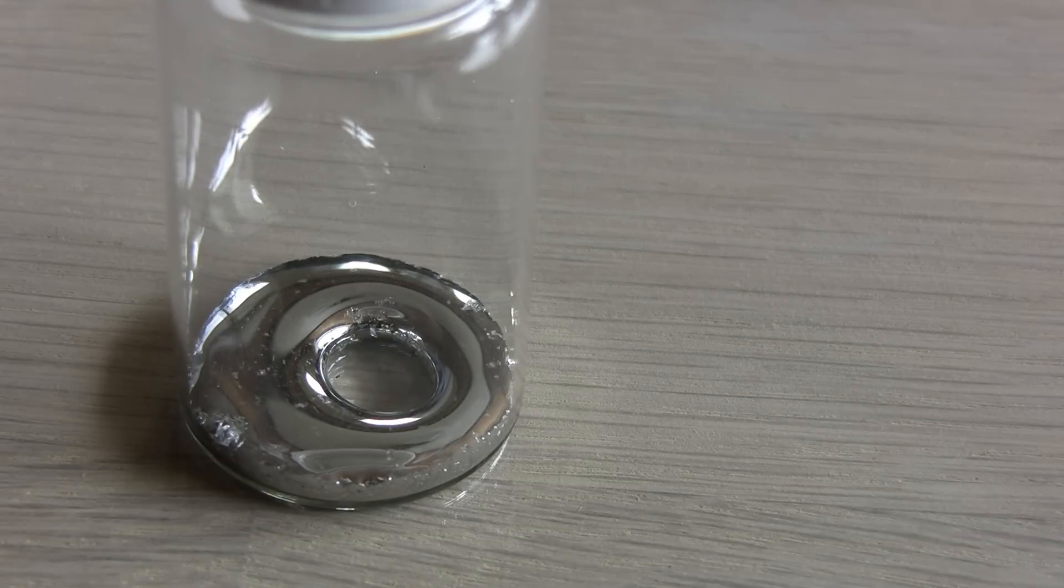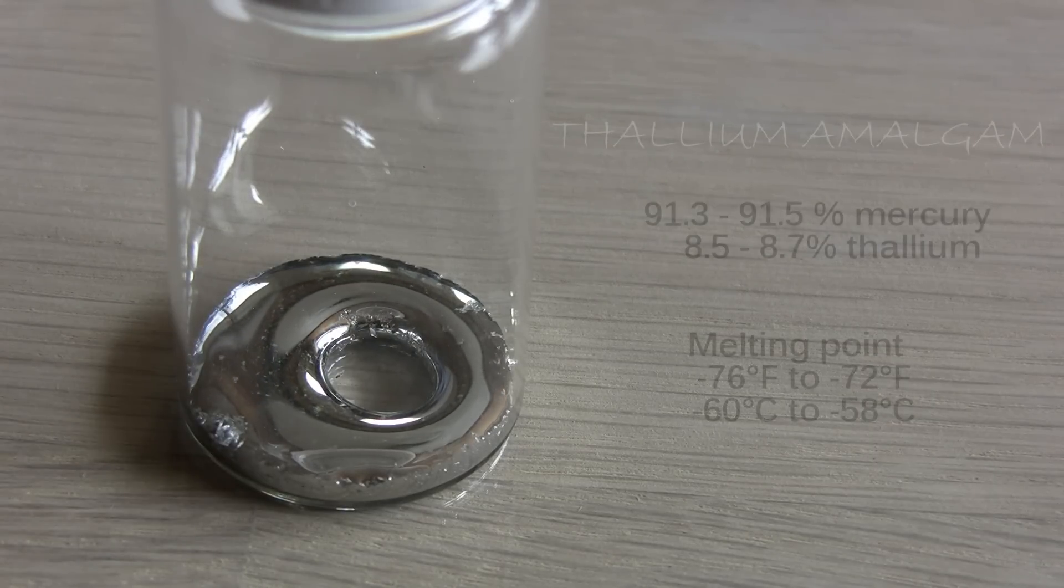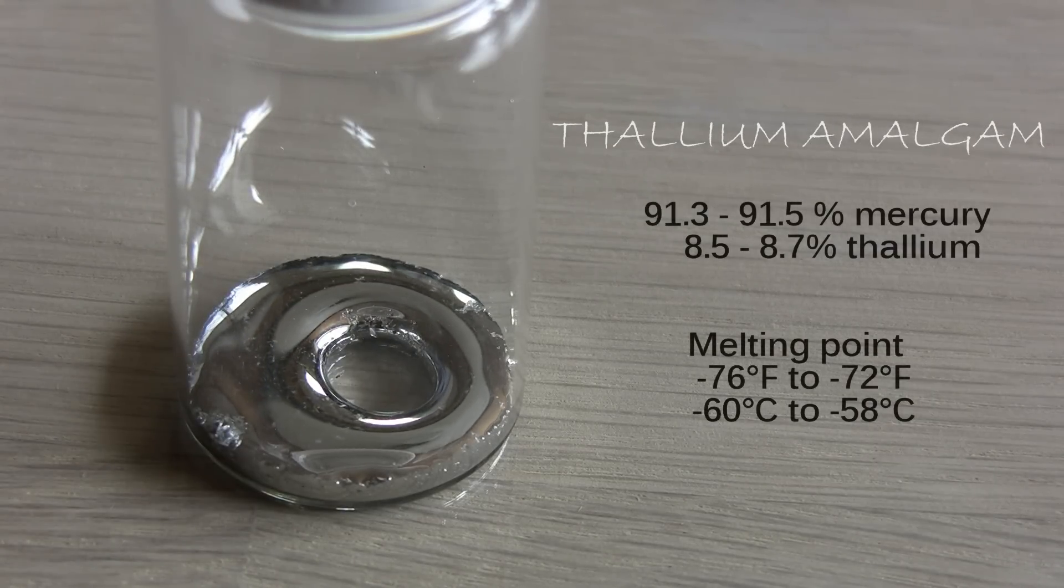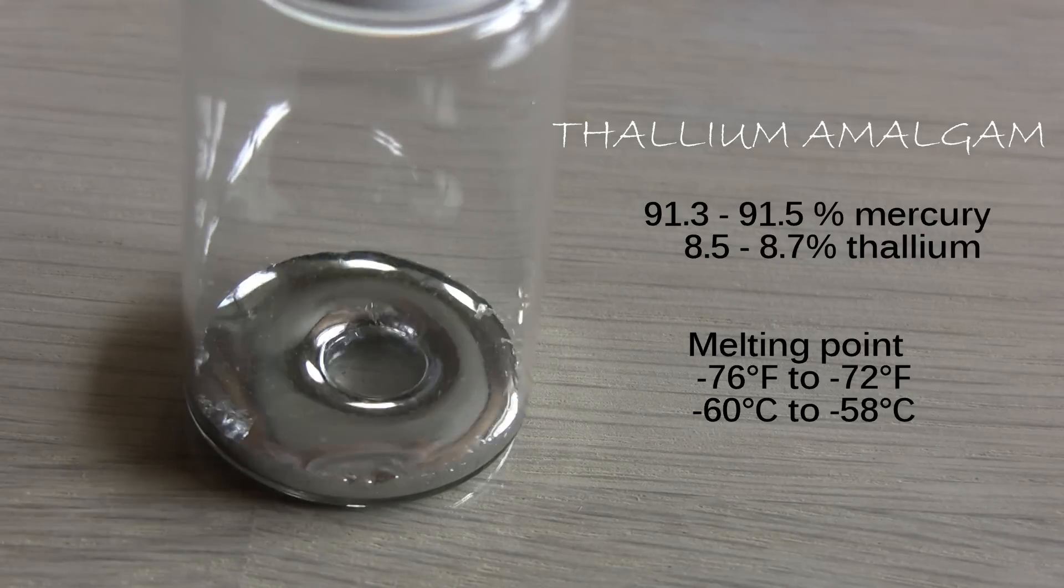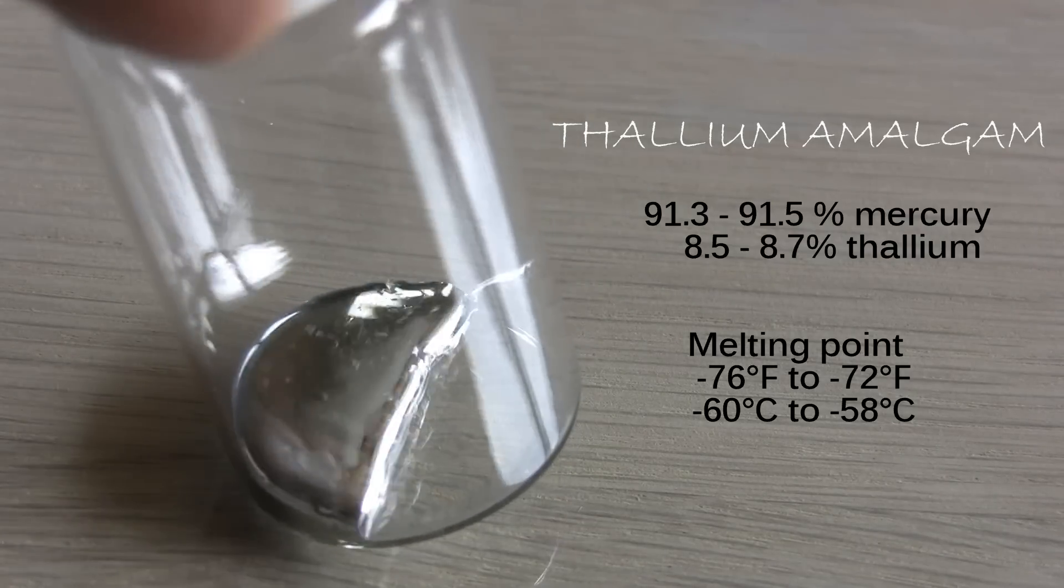Interestingly mercury can dissolve a lot of different metals in so-called amalgams. If you combine mercury with the even more toxic metal thallium you get an alloy with a melting point of minus 72 degrees Fahrenheit.